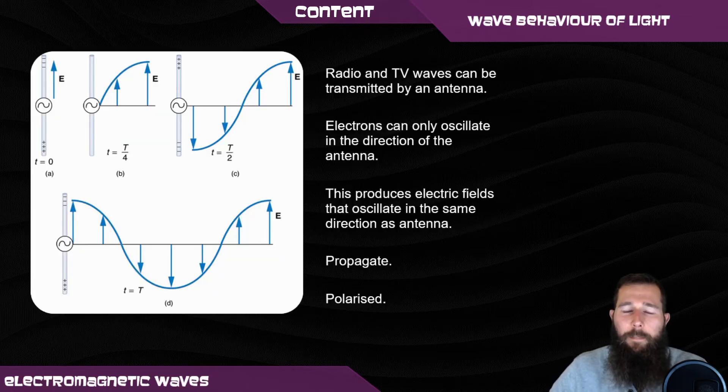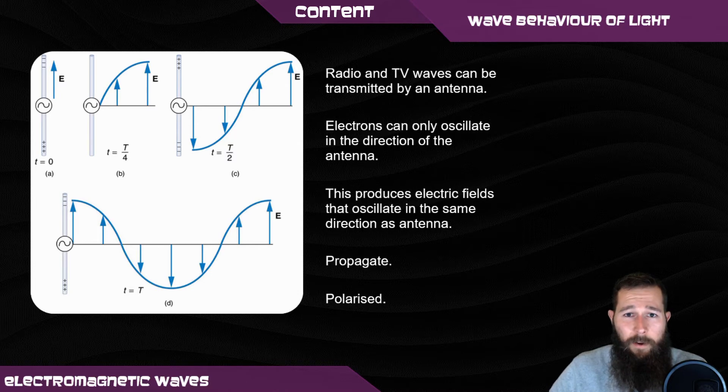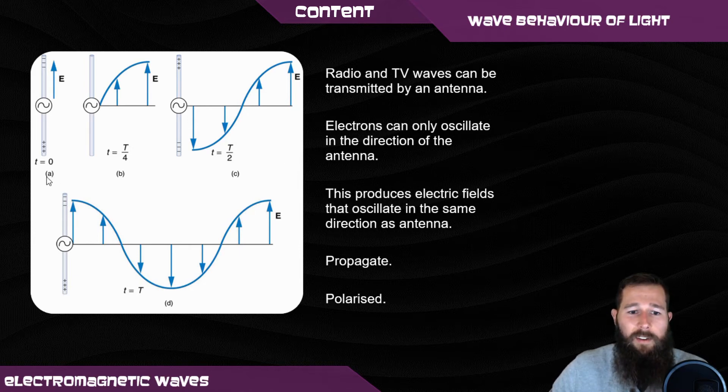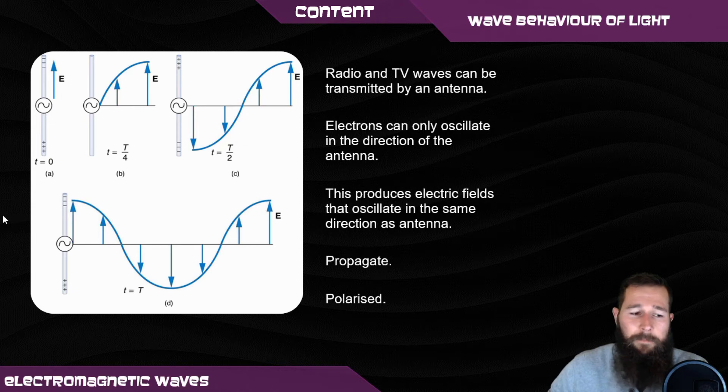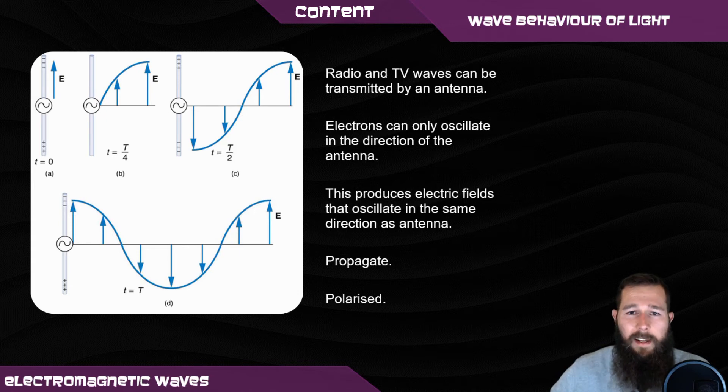Radio and TV waves can be transmitted by an antenna. Be careful with the use of antenna and aerial—we use antenna in physics because it both transmits and receives. In the antenna, electrons will oscillate in the direction of the antenna because that's the direction they're limited to. This produces an electric field that propagates at the speed of light, and that electric field oscillates in the direction of the antenna, meaning that's the plane of polarization.